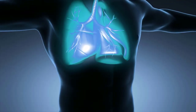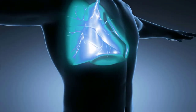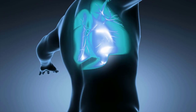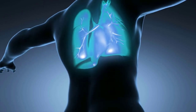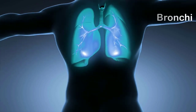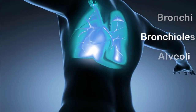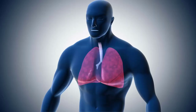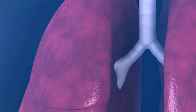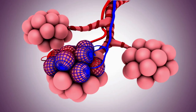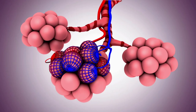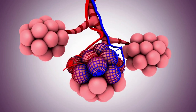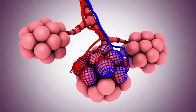Within the lungs, air flows along a dead-end pathway consisting essentially of bronchi, bronchioles, and alveoli. Incoming air stops at the alveoli, which are millions of tiny thin-walled air sacs in which gas exchange occurs.